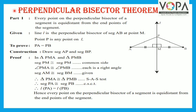Perpendicular Bisector Theorem Statement: Every point on the perpendicular bisector of a segment is equidistant from the endpoints of the segment.